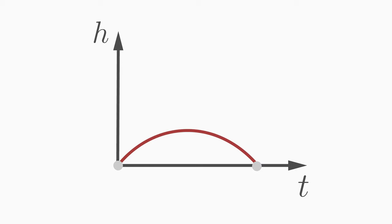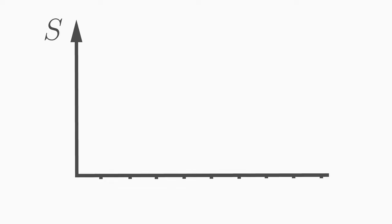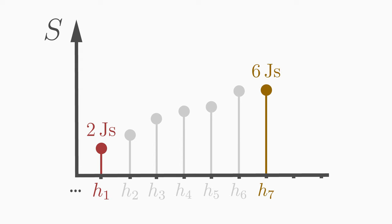Experience shows that nature is extremal. That means, if we calculate the action for all possible paths h1, h2, h3 and so on between A and B, then nature takes the action value which is either maximum, minimum or a saddle point. Nature chooses one of these paths.